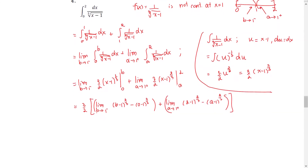As B approaches 1, B minus 1 to the power 2/3 approaches 0. For 0 minus 1 to the power 2/3, this approaches 1. For 2 minus 1 to the power 2/3, this approaches 1. And A minus 1 to the power 2/3 as A approaches 1 from the right also approaches 0. That means we have 3/2 multiplied by (0 minus 1) plus (1 minus 0), giving a result of 0, which is a finite real number. Therefore we say the improper integral converges.